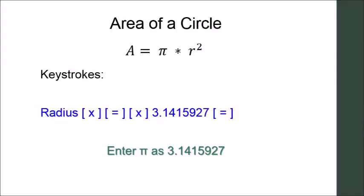Applications. Area of a circle. The formula is radius squared times pi. Since most four function calculators allow eight digits, we will use the approximation of 3.1415927 for pi. So the keystrokes will be radius times equals times 3.1415927 equals.